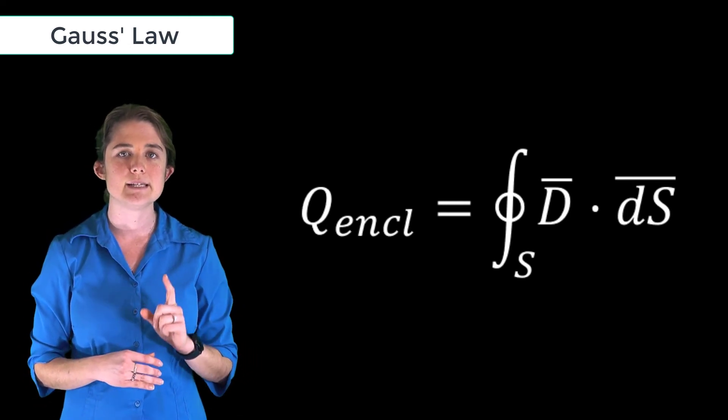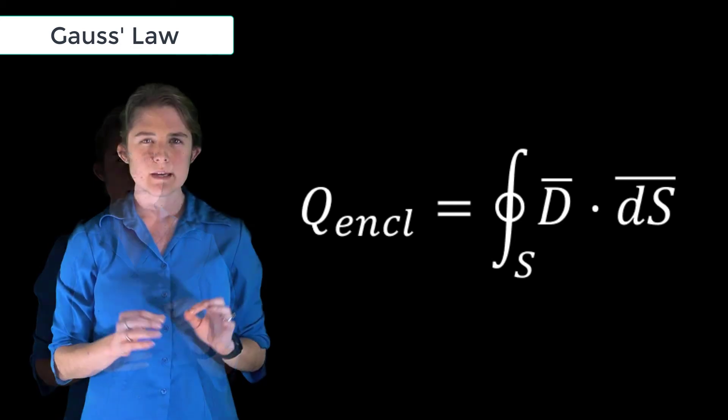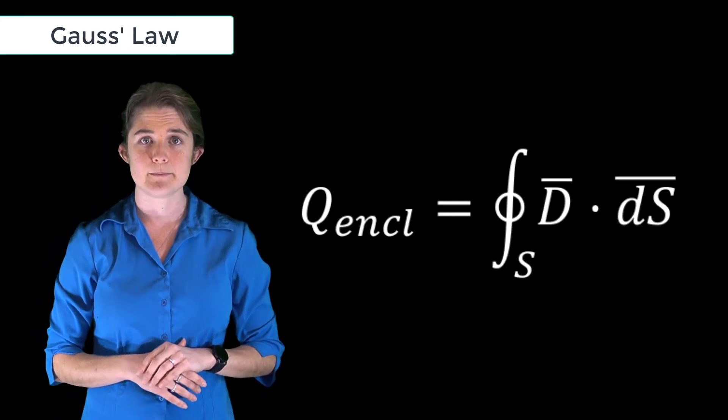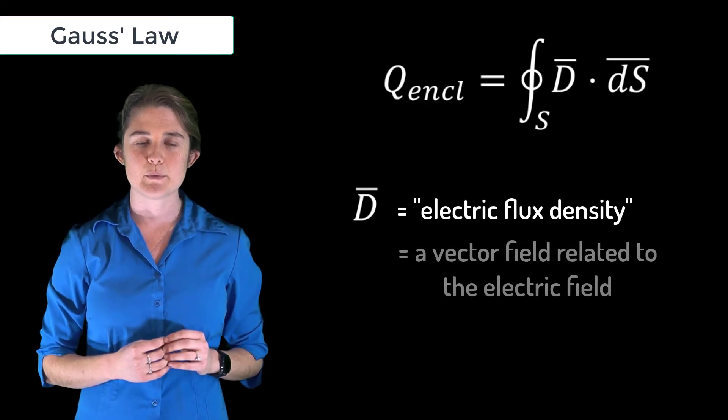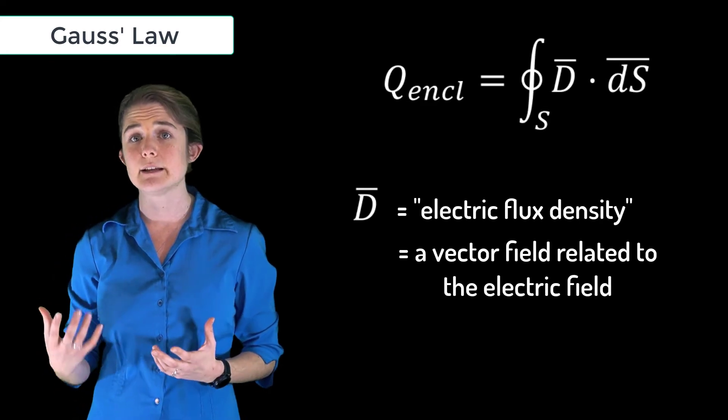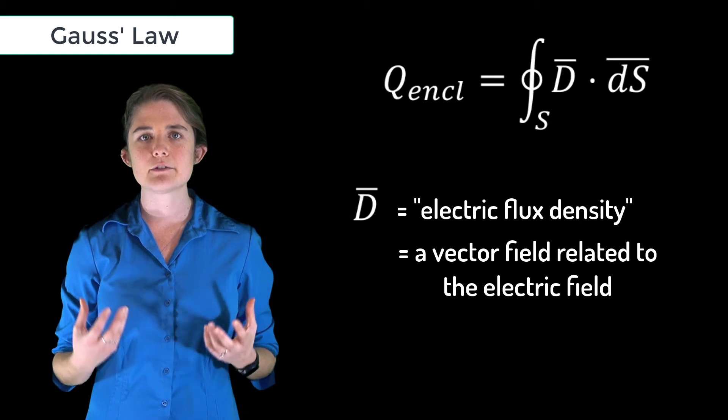Now we're introducing a new quantity here, D. D is the electric flux density, which is a vector field that is related to the electric field by the material response of the medium in which the field exists.